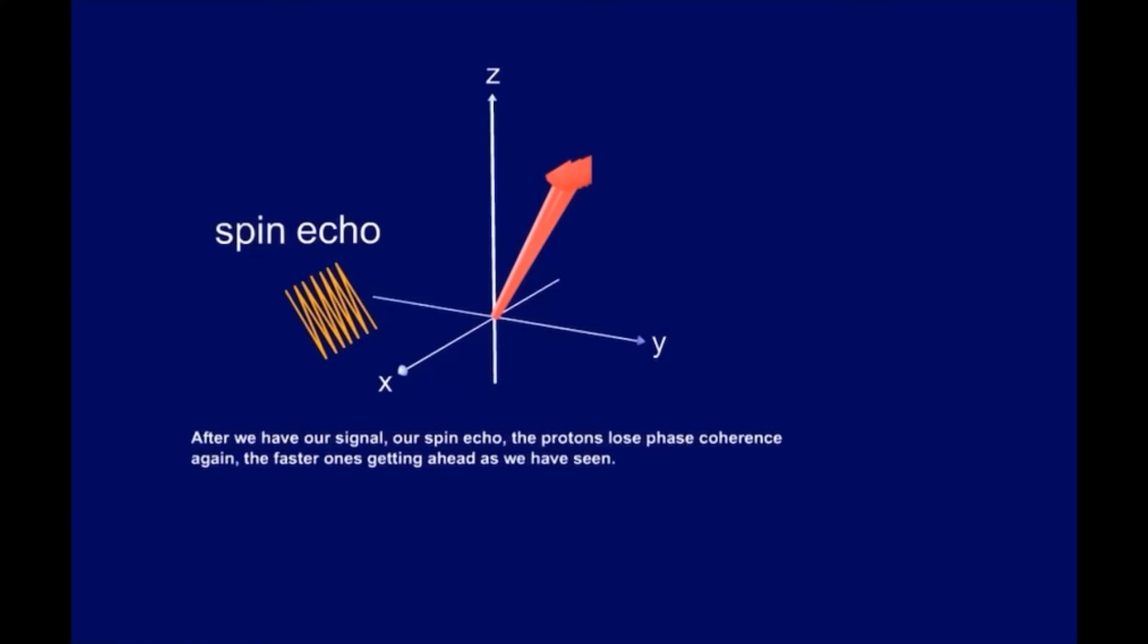After we have our signal, our spin-echo, the protons lose phase coherence again, the faster ones getting ahead as we have seen.